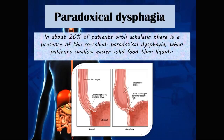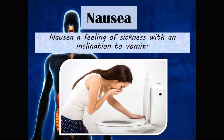Paradoxical dysphagia occurs in about 20% of patients with achalasia. In these patients, it is actually easier to swallow solid foods rather than liquids. In achalasia, there is a problem with the lower esophageal sphincter relaxing, which prevents food from entering the stomach. Solids can push the sphincter open, but liquids tend to accumulate. In long-standing achalasia, the lower esophagus will dilate due to liquid and food accumulation.